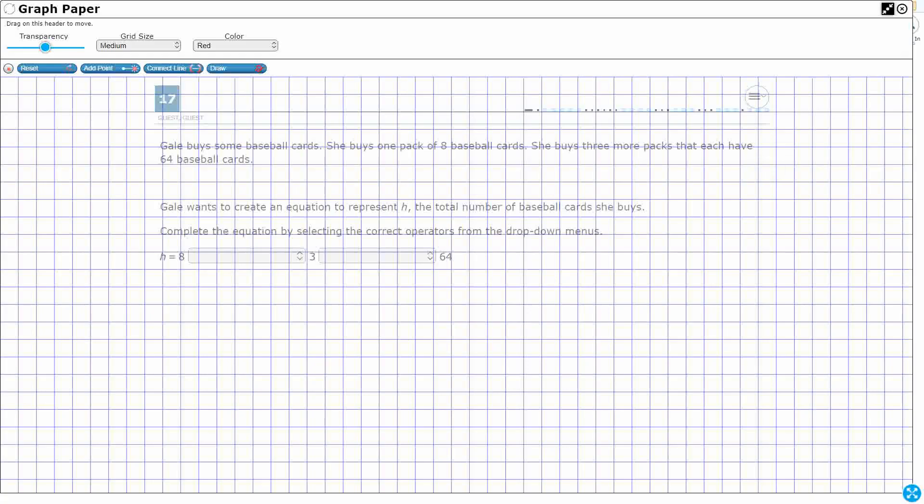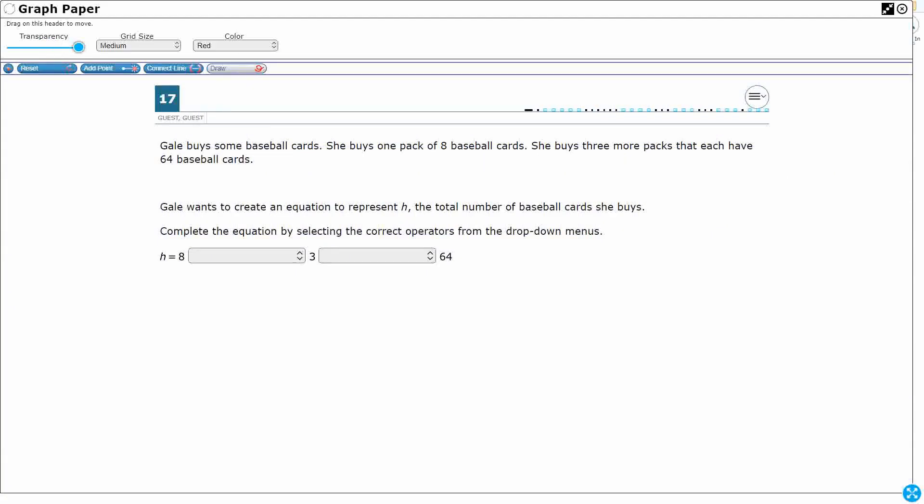All right, so we definitely need to draw a picture to represent what's going on here. So Gail buys some baseball cards. We don't know what that is. So she buys one pack of eight.